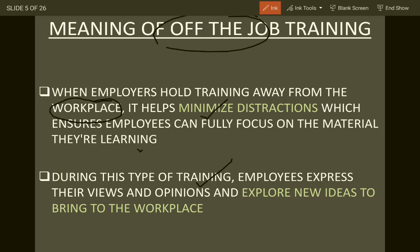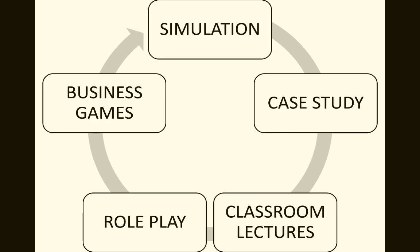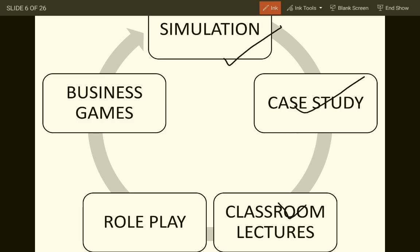During off-the-job training, employees express their views, opinions, and explore new ideas. In on-the-job training, the training is given by supervisors or managers, so employees are a little nervous to express their views and opinions. Whereas in off-the-job training, they are very free to express their ideas and views and explore new opportunities.